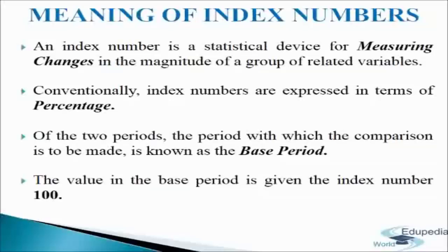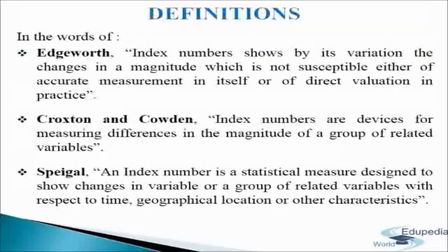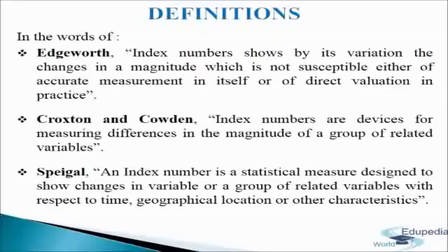Index numbers are known as barometers of economic activity as they are used to feel the pulse of an economy. Let us read some definitions of index numbers given by economists. In the words of Edgeworth: index numbers show by their variation the changes in a magnitude which is not susceptible either of accurate measurement in itself or of direct valuation in practice. In the words of Troxton and Cowden: index numbers are devices for measuring differences in the magnitude of a group of related variables. In the words of Spiegel: an index number is a statistical measure designed to show changes in a variable or a group of related variables with respect to time, geographical location, or other characteristic.